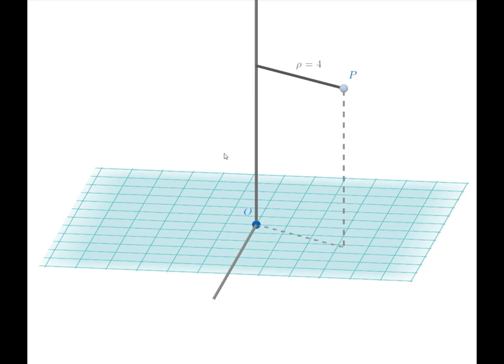The next dimension is the height of the point above the plane we've constructed. And that is simply this segment. So the coordinate Z tells us how far up we go.